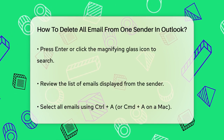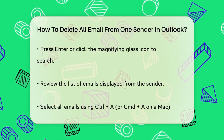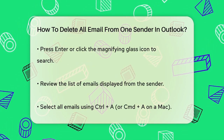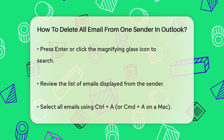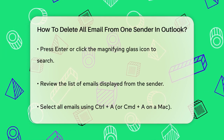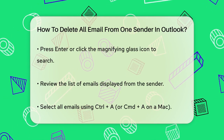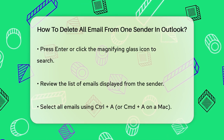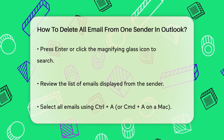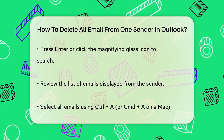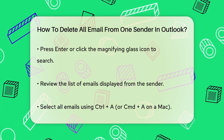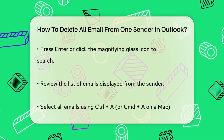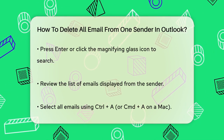Press Enter or click on the magnifying glass icon to perform the search. Outlook will then display a list of emails from that sender in the search results. Now you need to select all these emails. You can do this by pressing Ctrl+A on your keyboard, or Command+A if you're using a Mac.